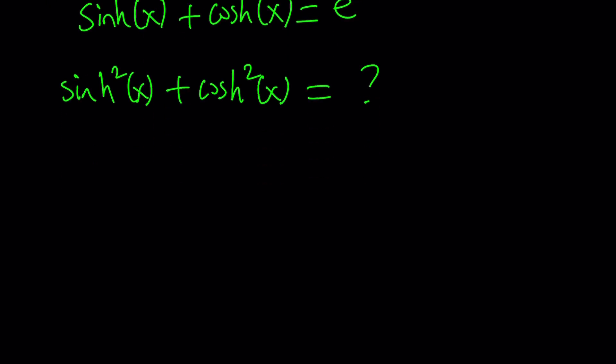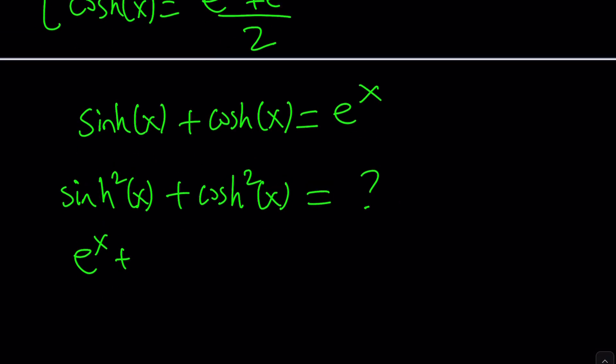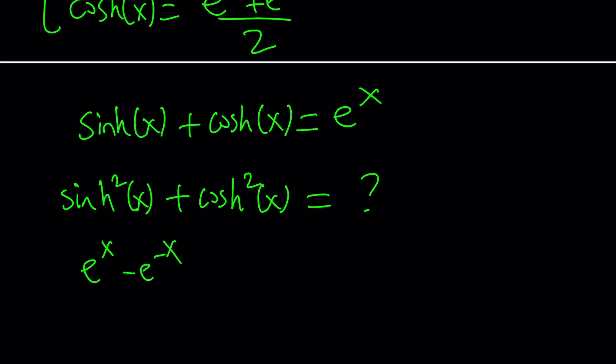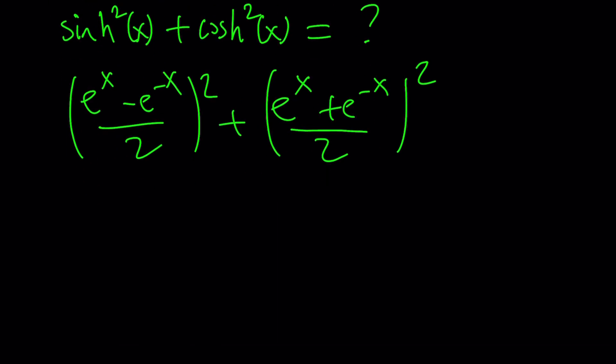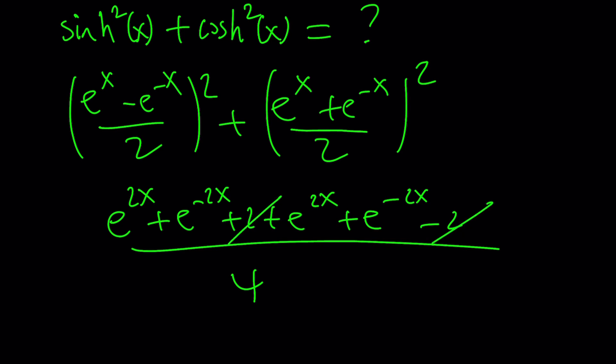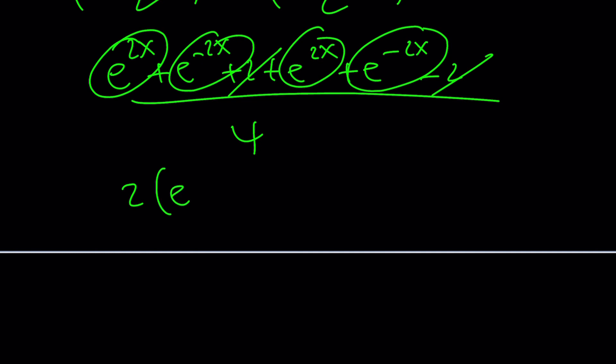We can replace hyperbolic sine with e to the x minus e to the negative x divided by two, and we're going to square that. e to the x plus e to the negative x divided by two, we're going to square that. When you square this and add them up, you're going to get e to the 2x, e to the negative 2x plus 2, plus e to the 2x plus e to the negative 2x minus 2, all over 4.